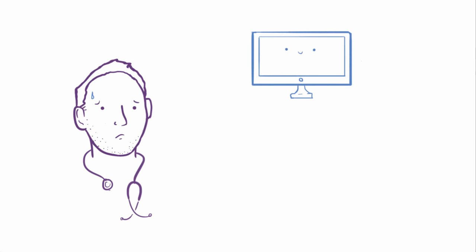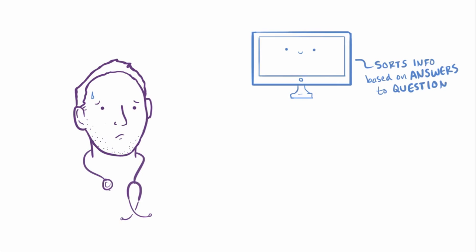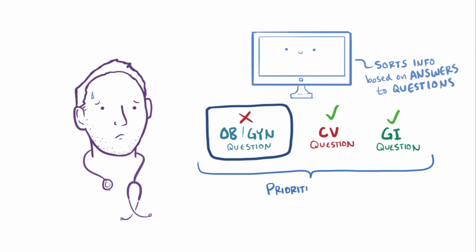And this is why researchers and software developers are using computer algorithms to try and help students optimize their studying. These algorithms help you learn by sorting information based on your responses to questions. So if you get a question wrong, you'll automatically prioritize that information for repetition over the information and questions you answered correctly.